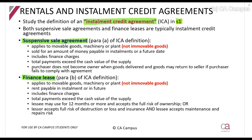A finance lease is something you have previously encountered in other subjects like financial accounting. That is where I say to you, here is a machine, you can lease the machine. Its useful life is six years; you can lease it for the full six years or for five years — the majority of its useful life. You will pay me an amount which is basically more than it costs. You are renting it from me, but it is more permanent than an operating lease.